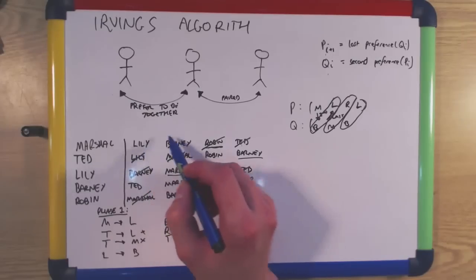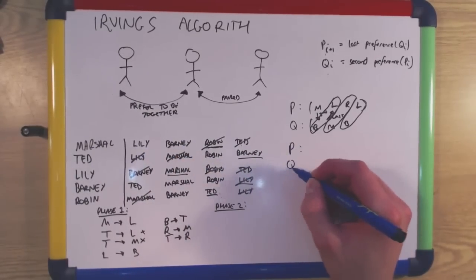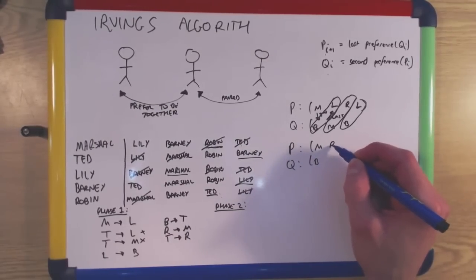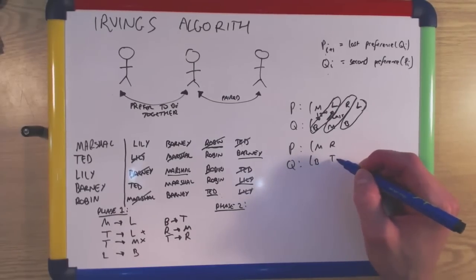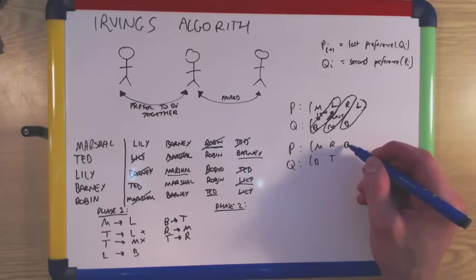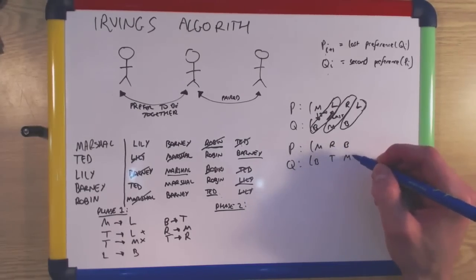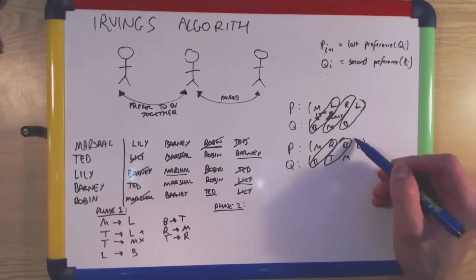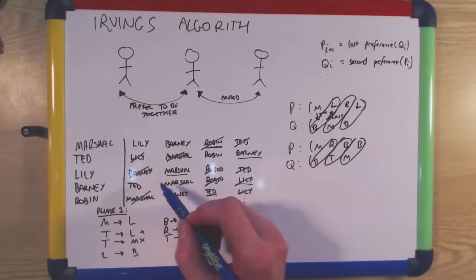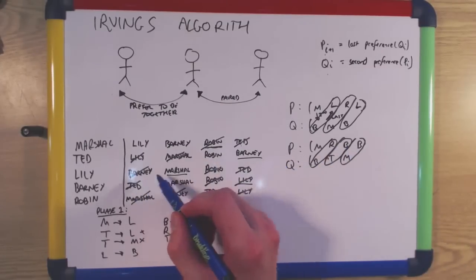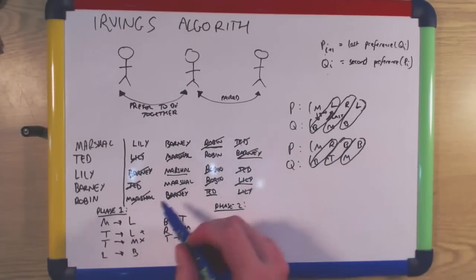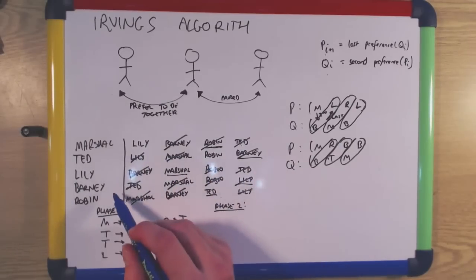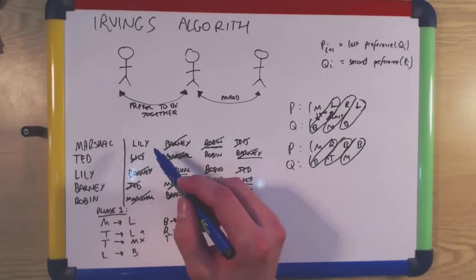Since there is still more than one person left in Marshall's list, we continue the process. Marshall's second preference is Barney. Barney's last preference is Robin. Robin's last preference is Ted. Ted's last preference is Barney. Barney's second preference is Marshall. Marshall's last preference is Barney. We now have a cycle because Barney has occurred twice in the list. So we reject all these pairs: Barney rejects Robin and vice versa, and Ted rejects Barney. Now Barney has been rejected by everyone, and Marshall is paired with Lily and Ted with Robin.